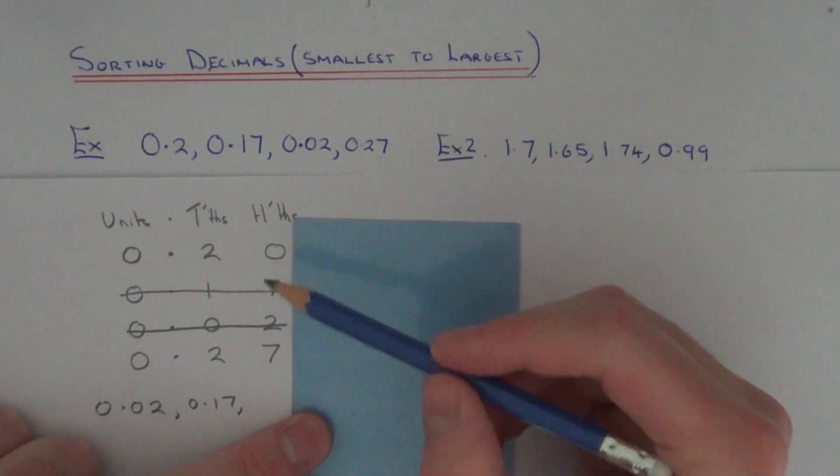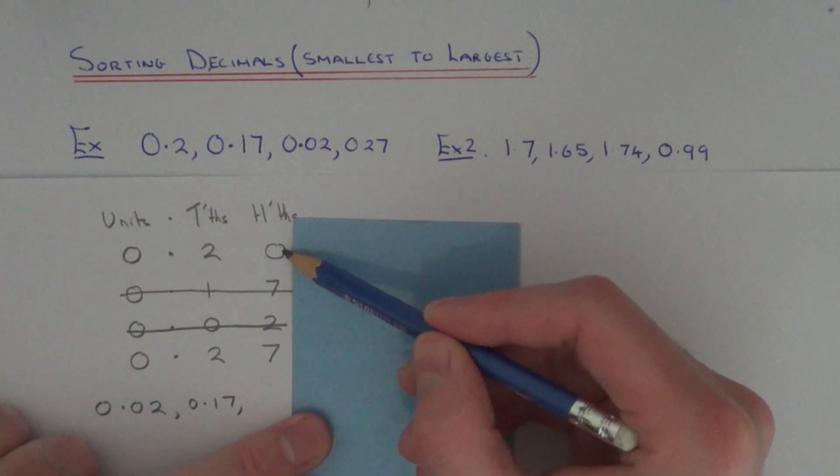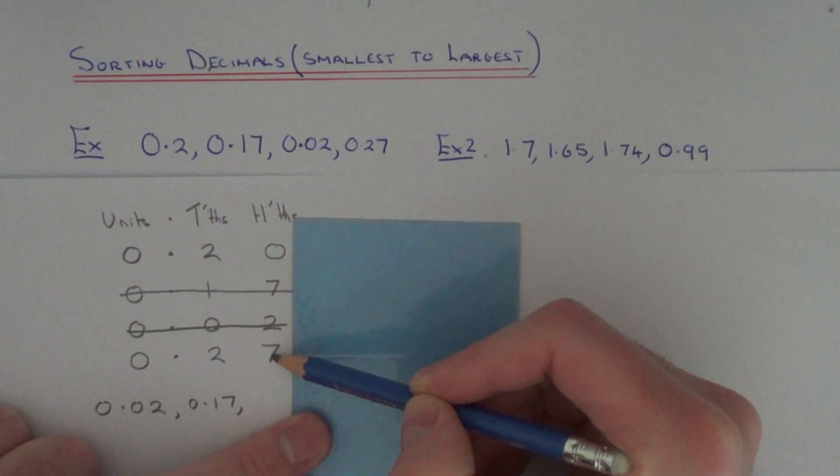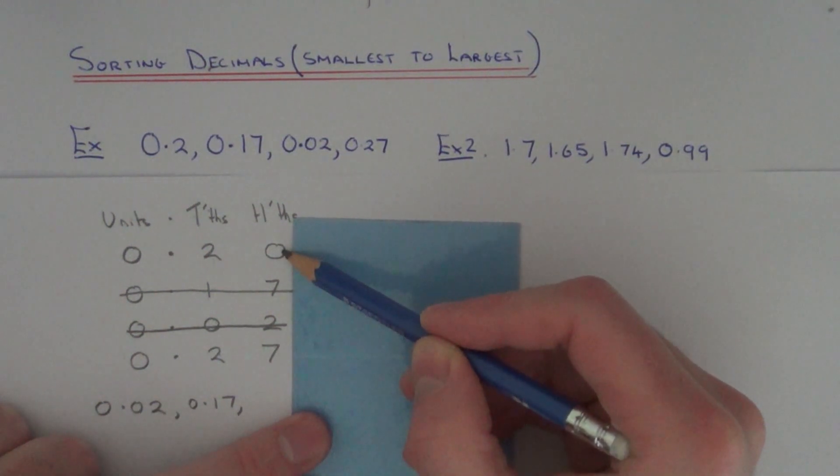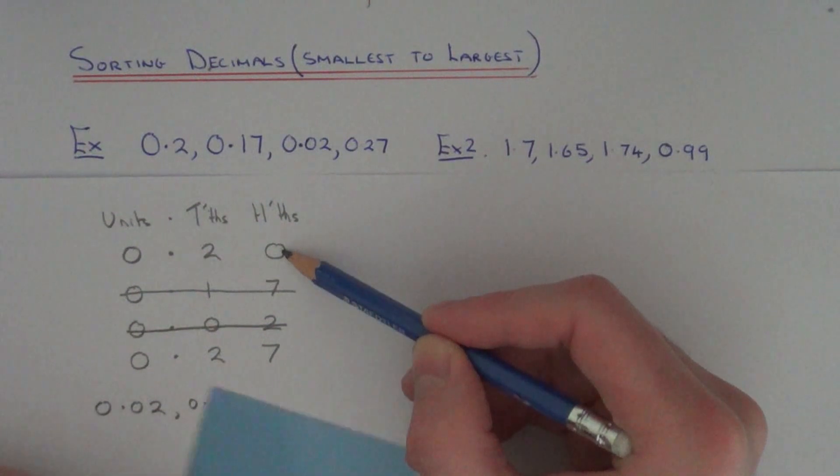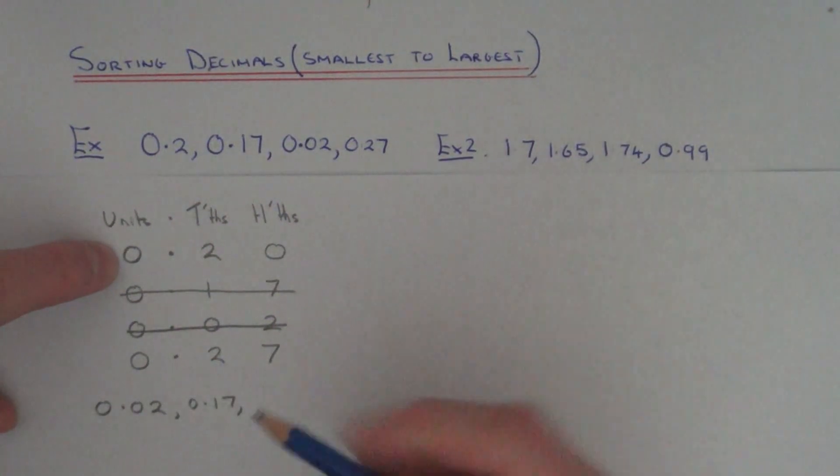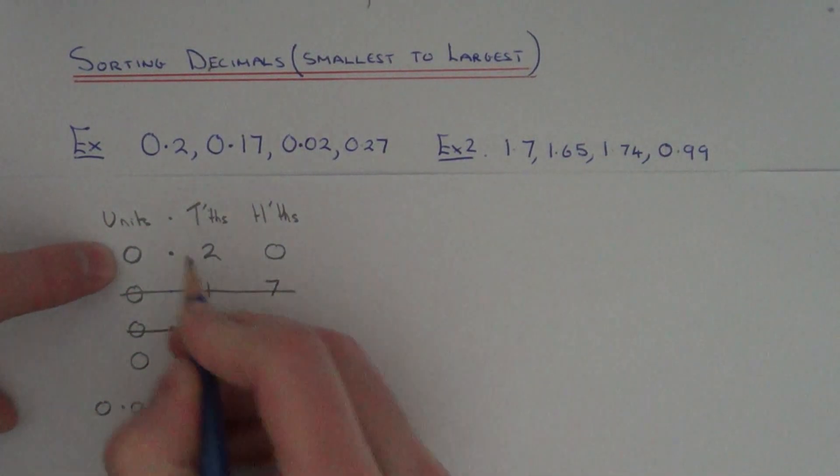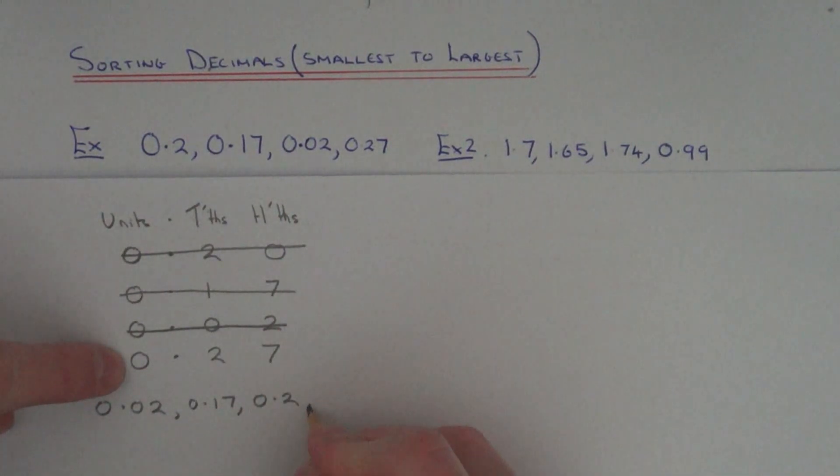So finally move to the hundredths column, and you can see we've got a 0 here and a 7 here. So that means 0.20 is the smallest. Make sure you write down 0.2 though, because we added the 0 there just to help us. So obviously 0.27 is our largest decimal.